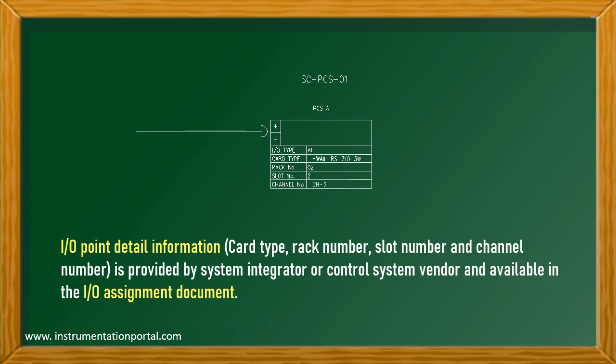And last, in the control system section, IO point detail information, such as card type, rack number, slot number, and channel number, are provided by system integrator or control system vendor, which is available in the IO assignment document.